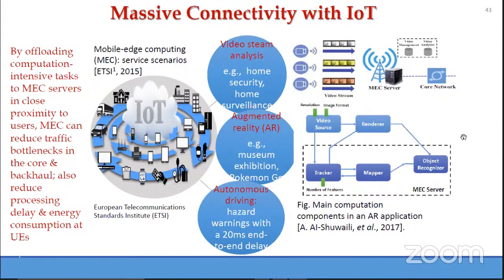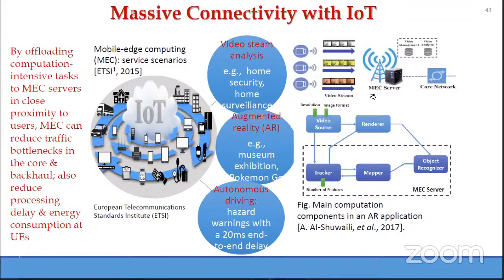If we have IoT connectivity with cellular networks, mobile edge computing (MEC) comes in. By offloading computation-intensive tasks to MEC services in close proximity to users, MEC can reduce traffic bottlenecks in the core and backhaul, and reduce processing delay and energy consumption at user equipment. More computation-intensive tasks go to the central cloud, while delay-critical but less computation-intensive tasks are handled at the edge using the MEC server.